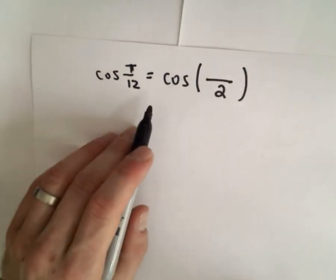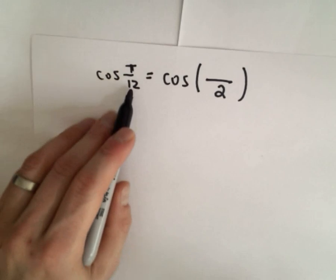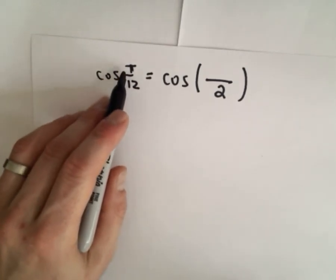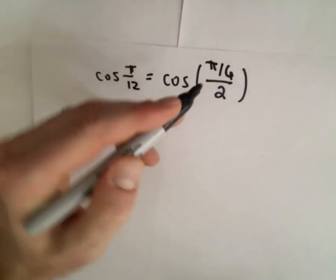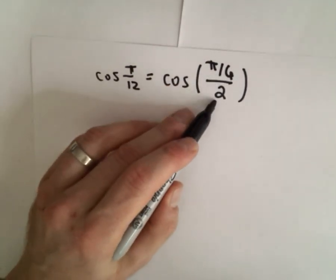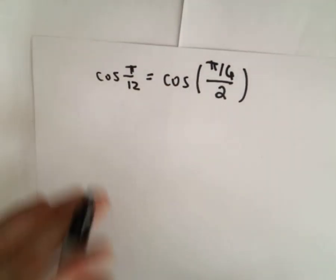Well, you can basically work backwards. If you multiply by two, two times pi over 12 will give you pi over six. So if you take pi over six and divide it by two, hey, you get pi over 12.